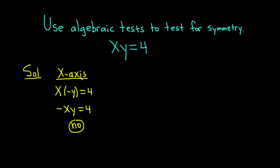To test for x-axis symmetry, you replace y with negative y in your equation. If you get the same equation, the answer is yes. If you don't, the answer is no.